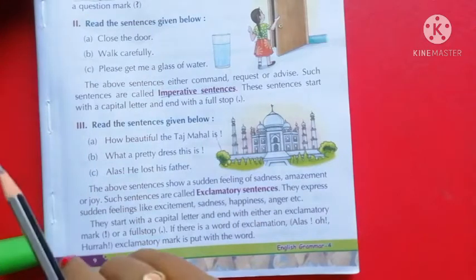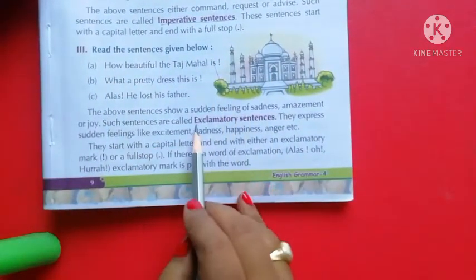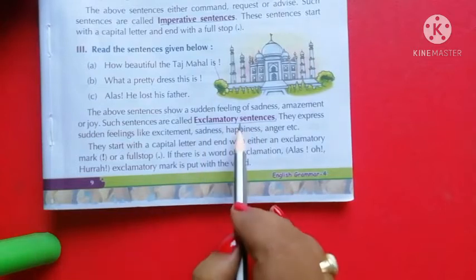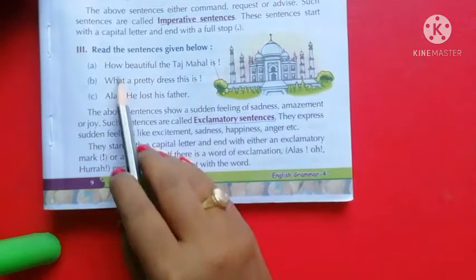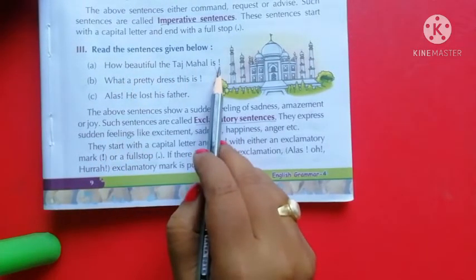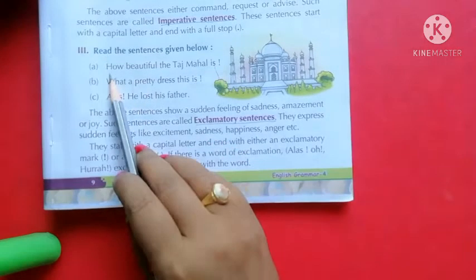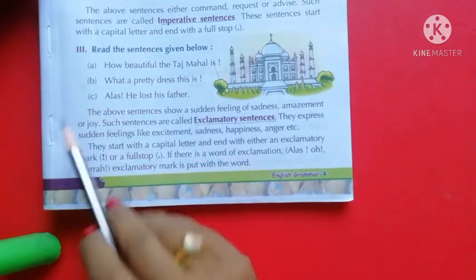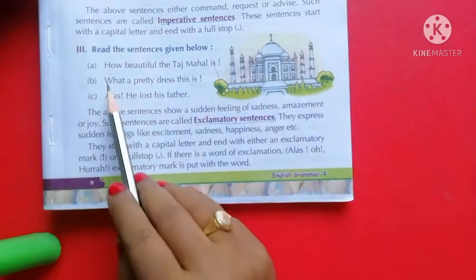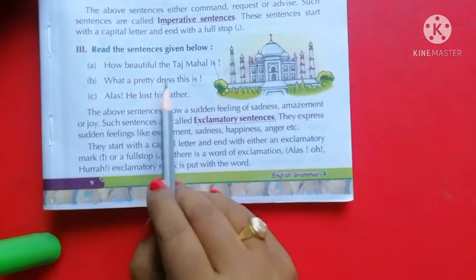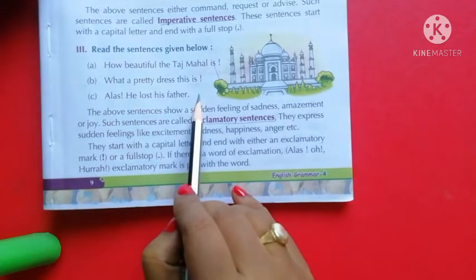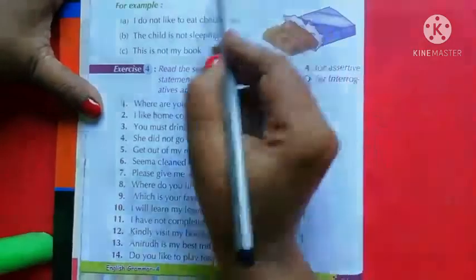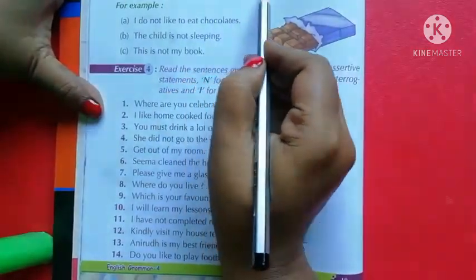Exclamatory sentences always end with an exclamation mark. For example: How beautiful the Taj Mahal is! What a pretty dress this is!